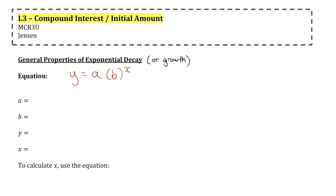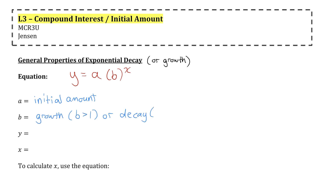Let me remind you what all four of those parameters stand for in this type of relationship. 'a' we usually use for the initial amount, 'b' is our growth or decay factor depending on its value — it's a growth factor if b is greater than 1, it's a decay factor if it's between 0 and 1, 'y' is the future amount, and 'x' is the number of growth or decay periods.